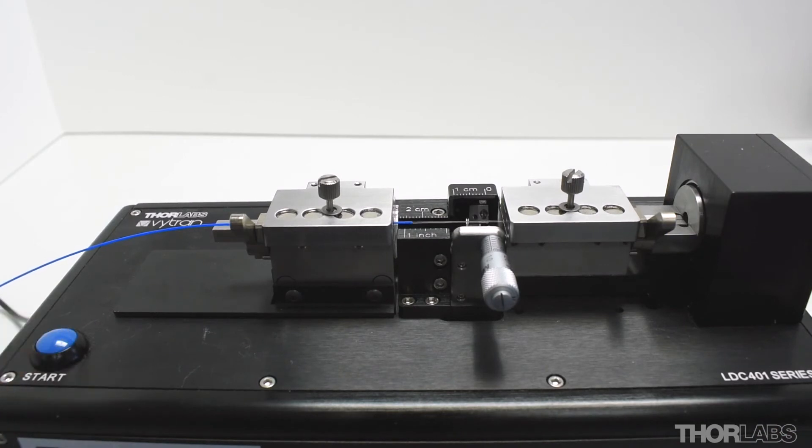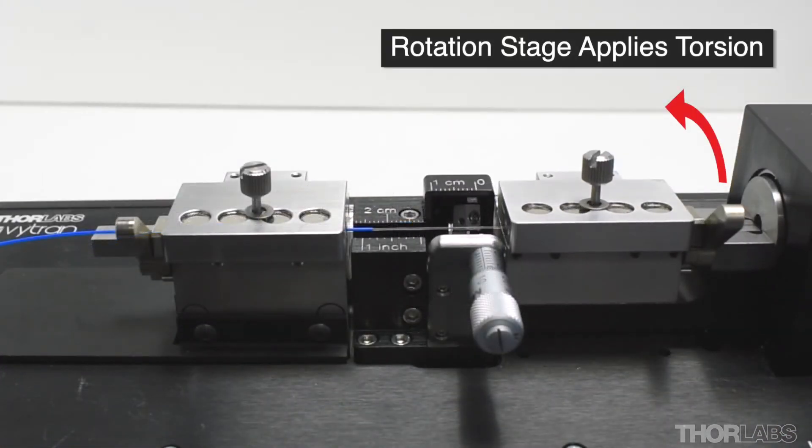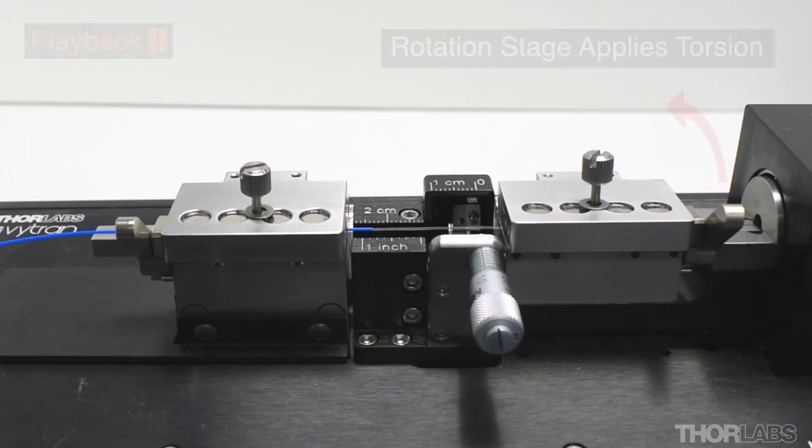Press the start button again to activate the cleave. First, the rotation stage will rotate the right-hand side fiber holding block by the angle set in the cleave file. This will apply torsional stress to the fiber.